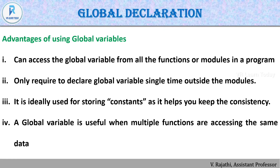Next, let's look at the advantages of global variables. A global variable can be accessed from all functions or modules in a program. You only need to declare a global variable once, outside of any function. It is ideally used for storing constants as it helps maintain consistency. Global variables are useful when multiple functions need to access the same data — declare once, access many times.